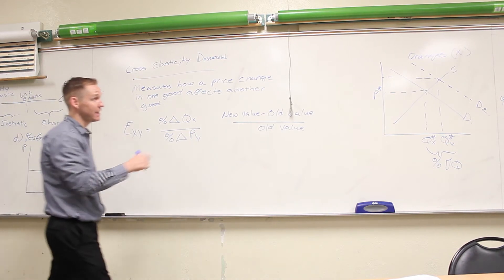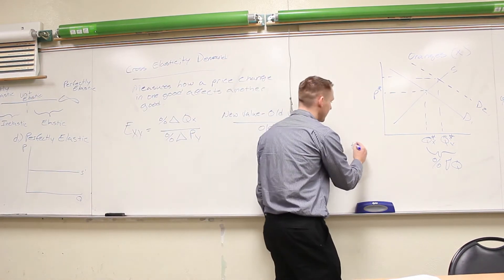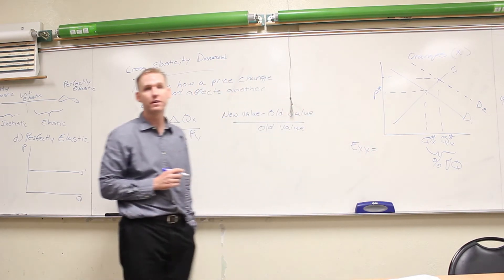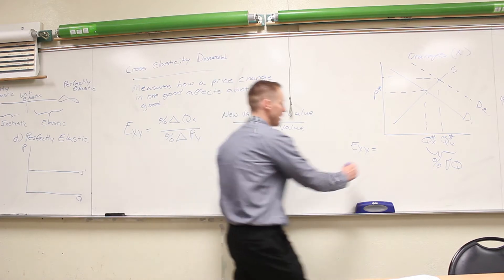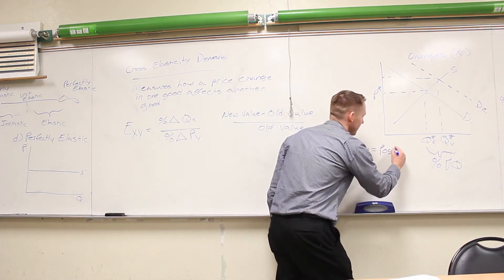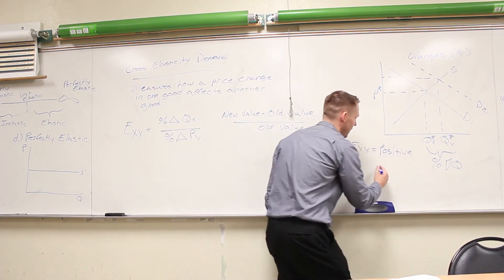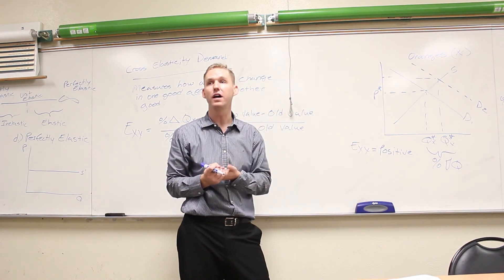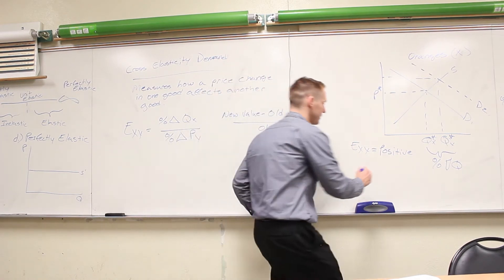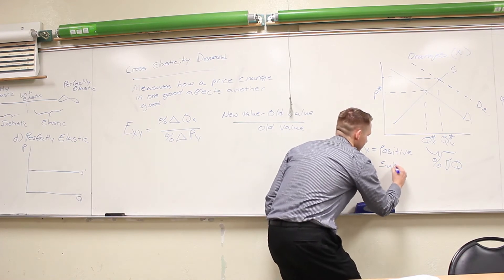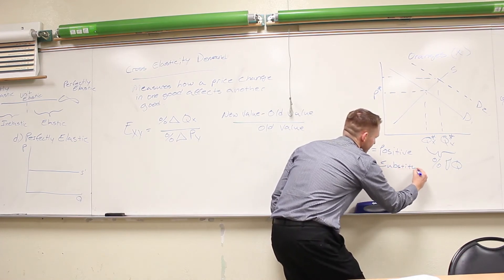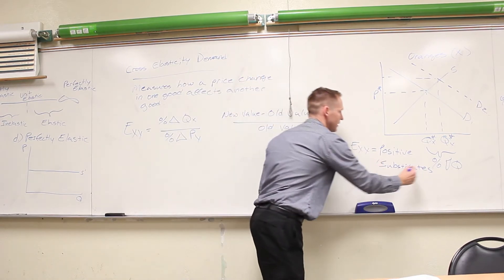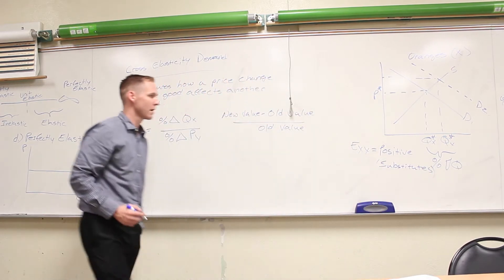So the cross-price elasticity in this case — would it be positive or negative? It would be positive, and that means bananas and oranges would be considered substitutes.